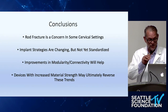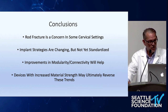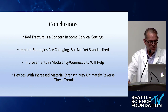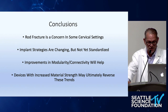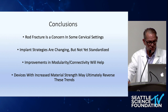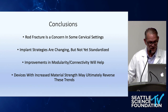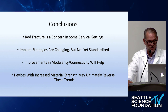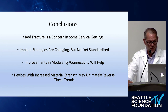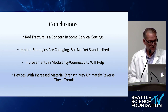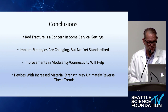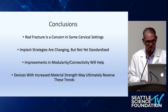In conclusion, rod fracture is a concern in some cervical settings, and I've tried to point out the ones most prone to it. Our implant strategies are changing in similar ways to how they've changed in thoracolumbar spine in the last several years. But I've not yet standardized an approach here — these are just first efforts and first ideas. I think we will see improvements in modularity and connectivity, perhaps dual head screws in the cervical spine, as well as better and more facile offset connectors. Ultimately, this reflects the strength of the materials we have, but we will see devices with increased material strength that may ultimately reverse these trends.